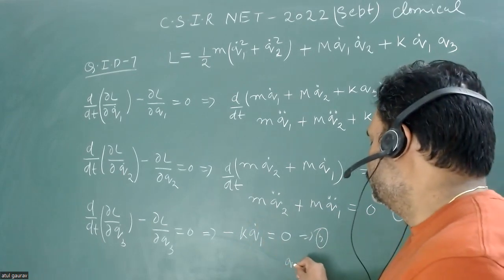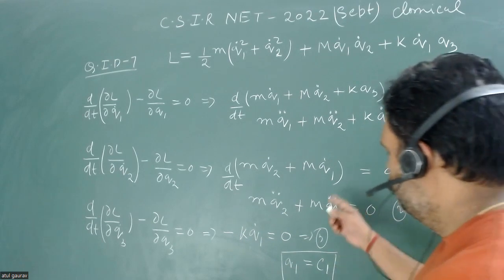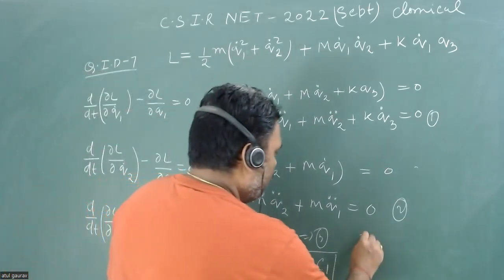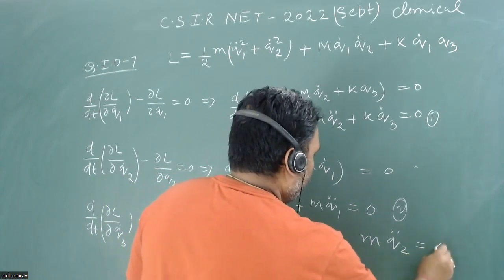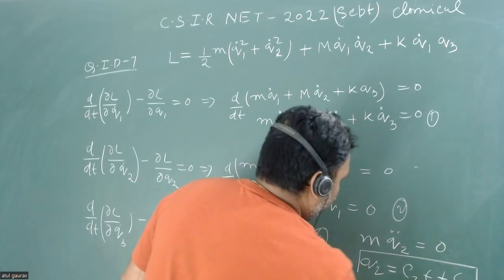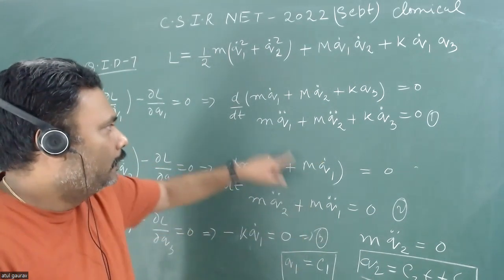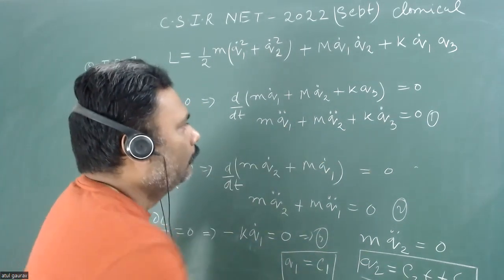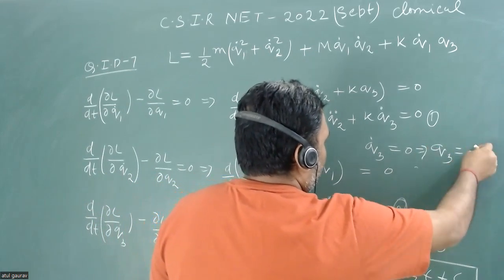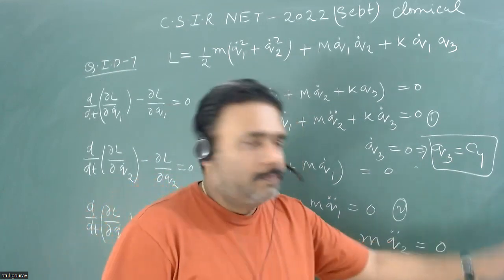From equation 3, K·Q1-dot equals zero, so Q1 must be a constant C1. Substituting Q1 constant into equation 2, M·Q2-double-dot equals zero, giving Q2 equals C2·t plus C3 — varying linearly with time. Back in equation 1, Q1-double-dot is zero and Q2-double-dot is zero, so Q3-dot equals zero, meaning Q3 is also a constant C4.